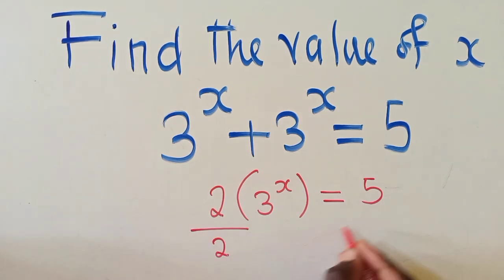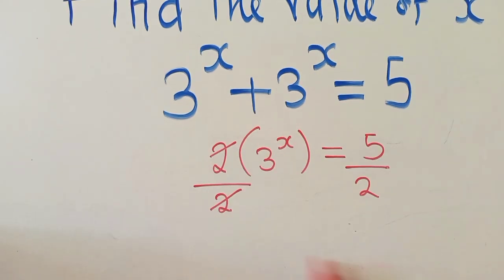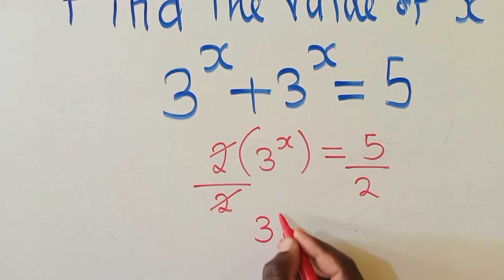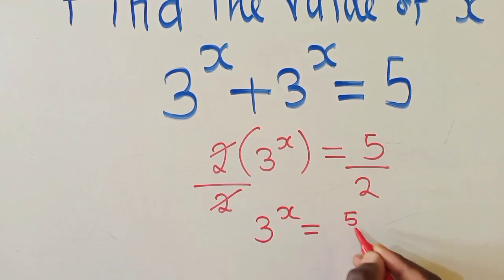So here we can divide by 2, divide by 2. So the 2 and the 2 will cancel. We shall remain with 3 power x, which is equal to 5 over 2.